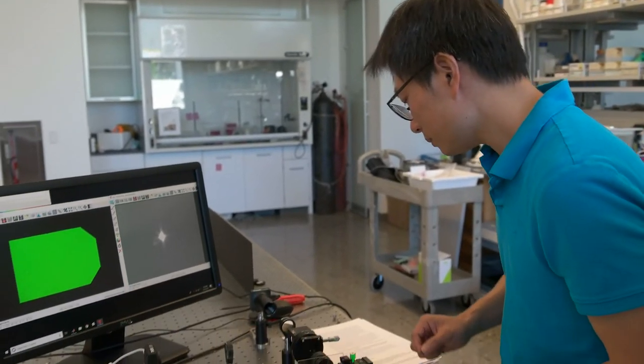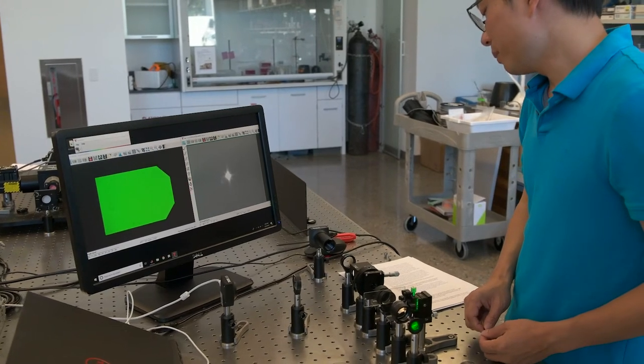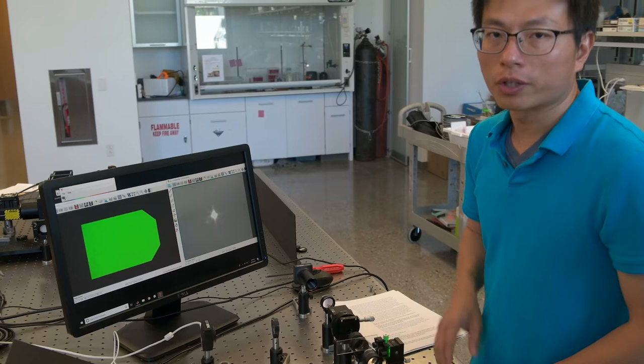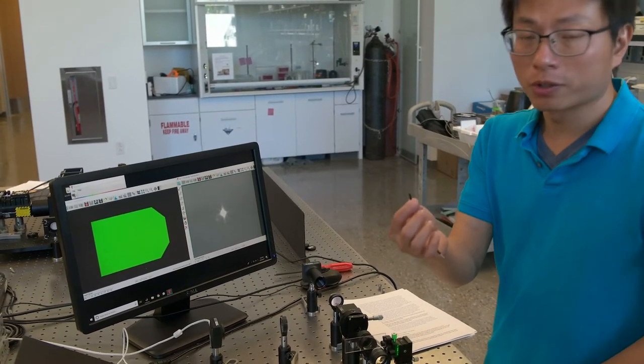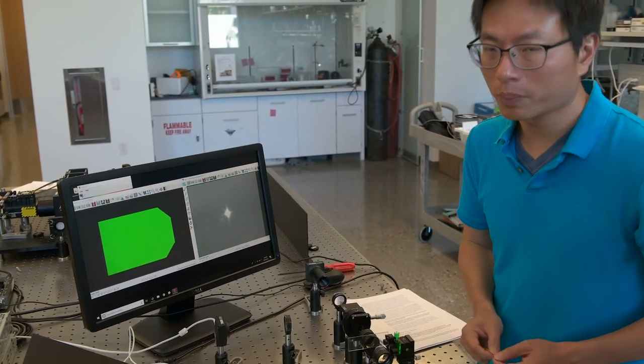Finally, I would like to show you a high-pass filtered image by blocking the center part at the Fourier transform. At the sample plane, we can see we are imaging a polygon pattern, and then you can see its Fourier transform at the Fourier plane. I'm going to use this thin wire to block the center part at the Fourier plane.